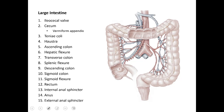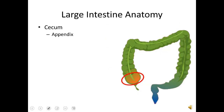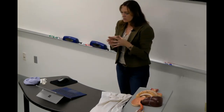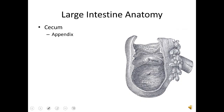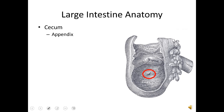Food arrives first at the cecum, a pouch-like structure. If the appendix has a gap, fecal matter can enter and fester, causing the immune system to react — leading to inflammation and a possible appendix rupture, which can progress very quickly. Looking closely, you can see where the ileum enters at the ileocecal valve; the cecum is the pouch below that point, and the opening into the appendix is in that area.